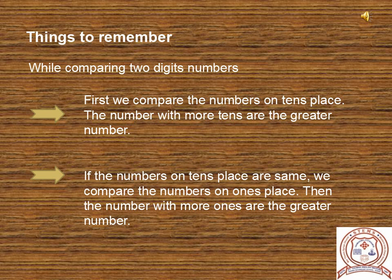Now students, I will tell you how to compare two-digit numbers. There are two important points to keep in mind. First, we compare the numbers on tens place — the number with more tens is the greater number. Second point: if the numbers on tens place are same, we compare the numbers on ones place — then the number with more ones is the greater number.